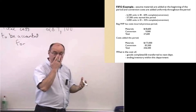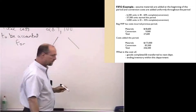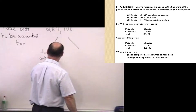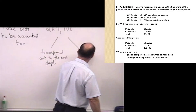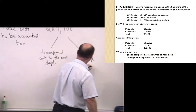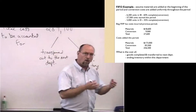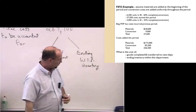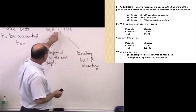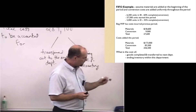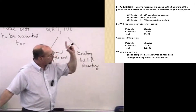This $284,100 is going to end up in one of two places: most of these costs will be transferred out to the next department, and some will still be sitting in ending work in process inventory. We have to do a cost reconciliation — of this $284,100, how much was transferred out and how much is still sitting in ending work in process? Those are the only two places they could be. We're looking first at FIFO.